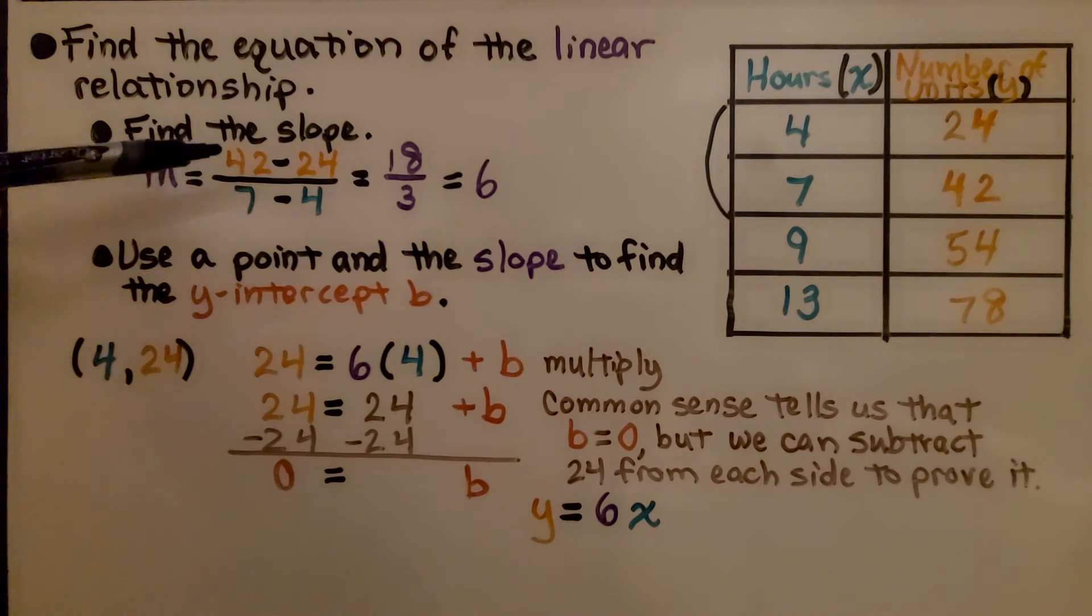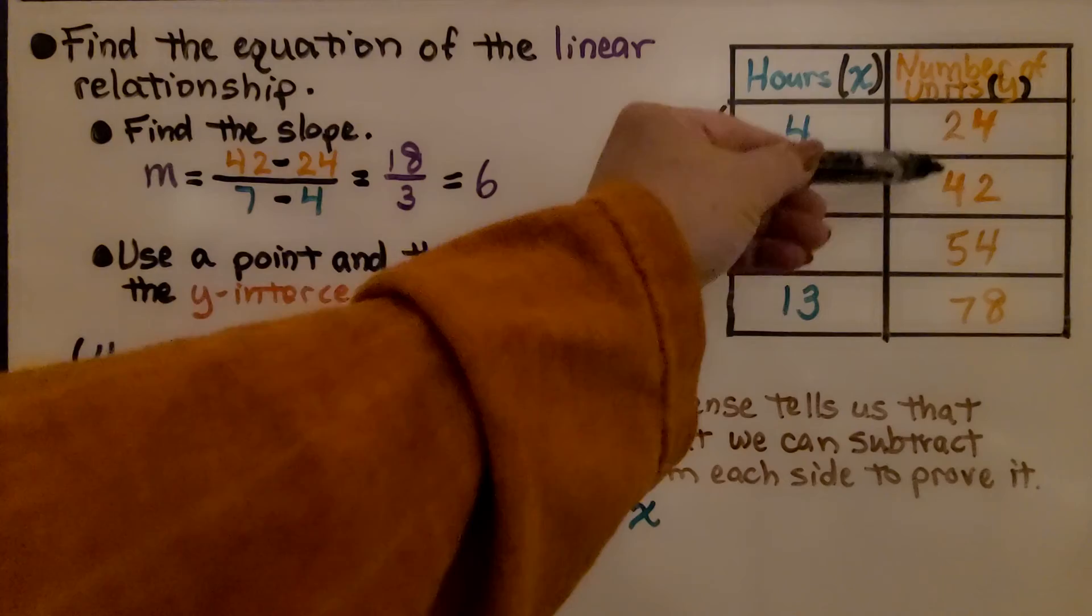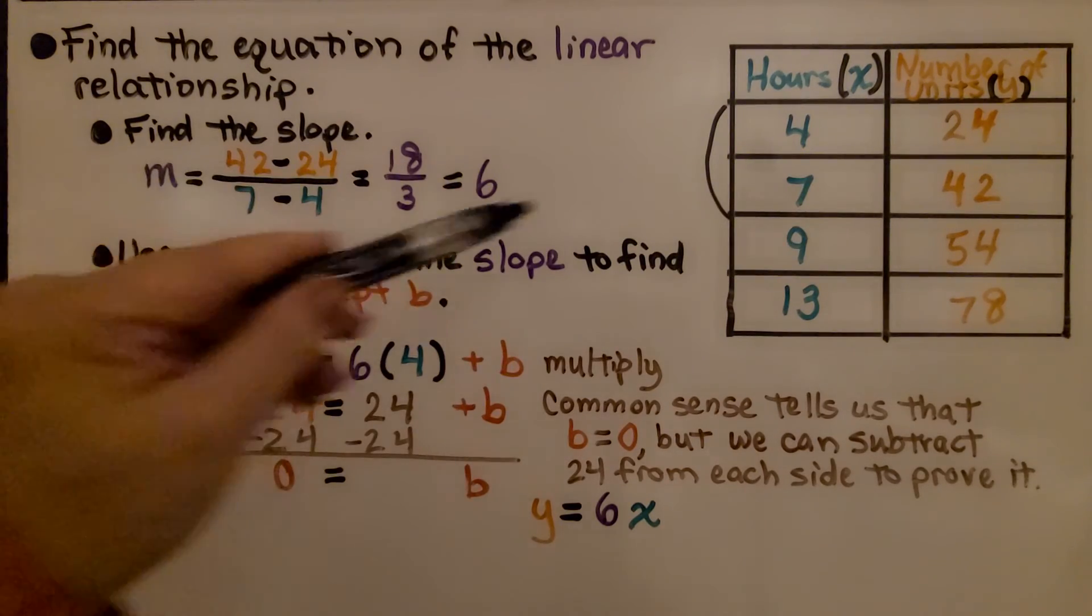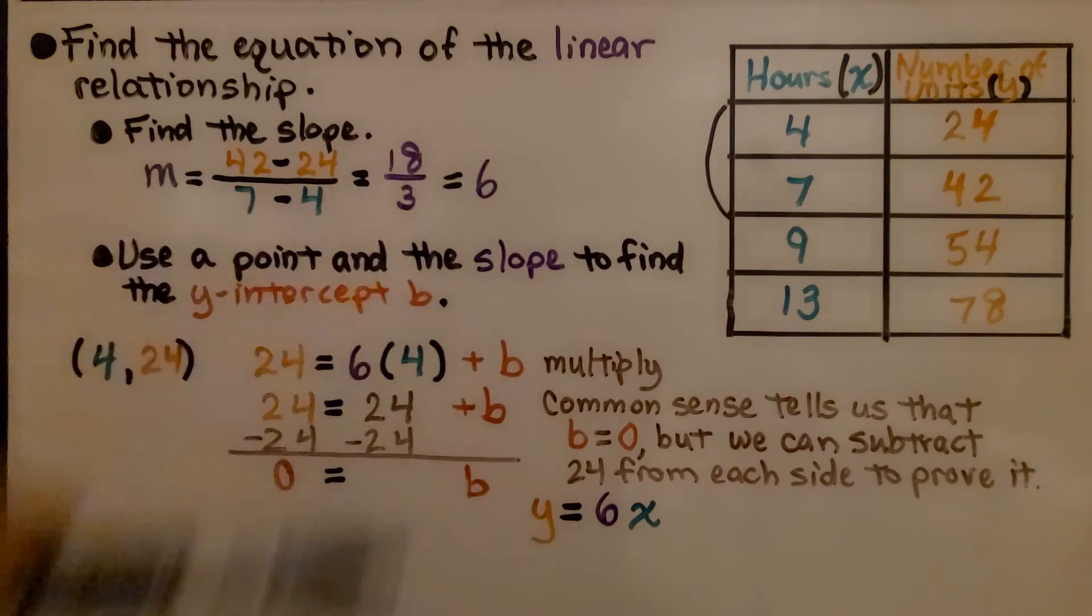Using the slope formula, we have 42 minus 24, which is 18, and 7 minus 4, which is 3. We have 18 over 3, and when we simplify it, we get 6 for our slope, for our rate of change.